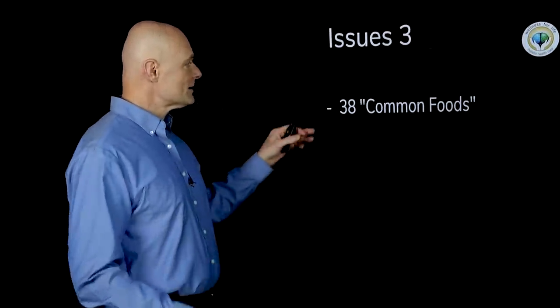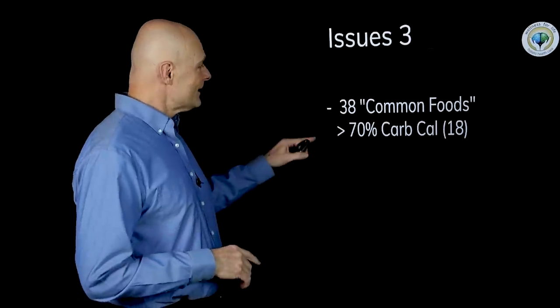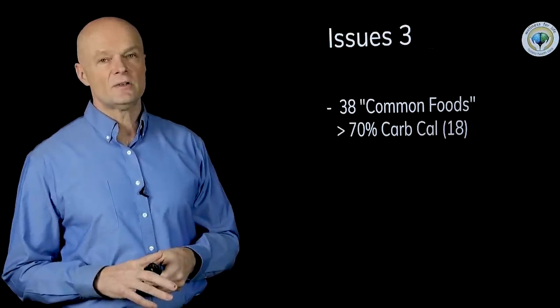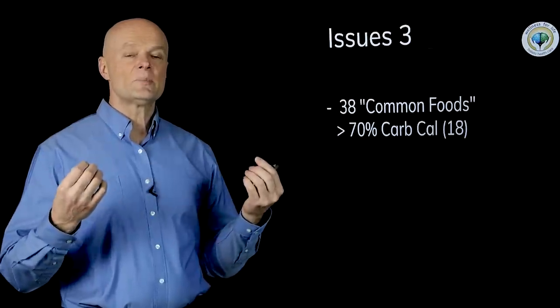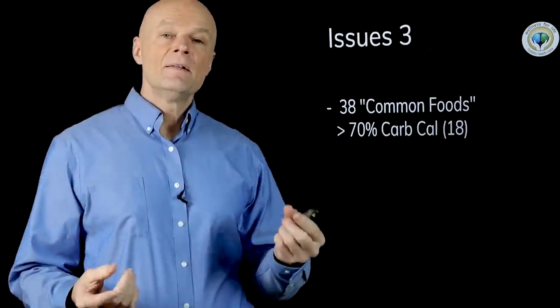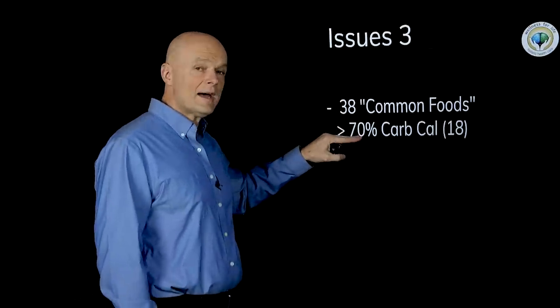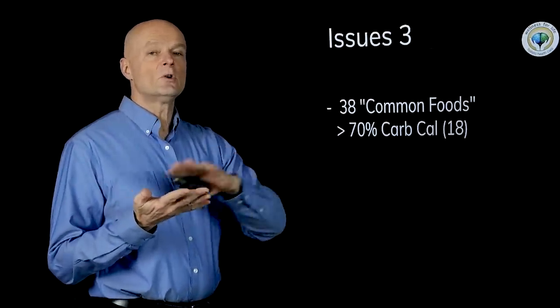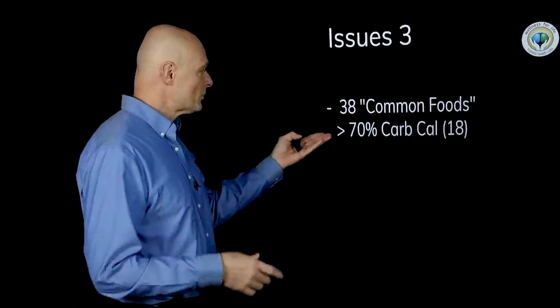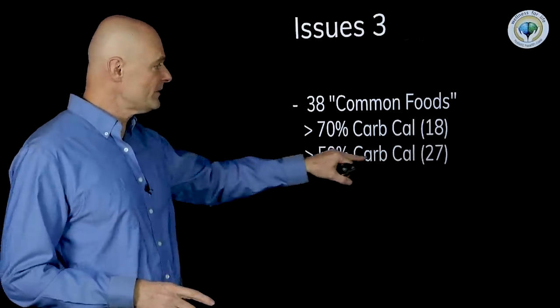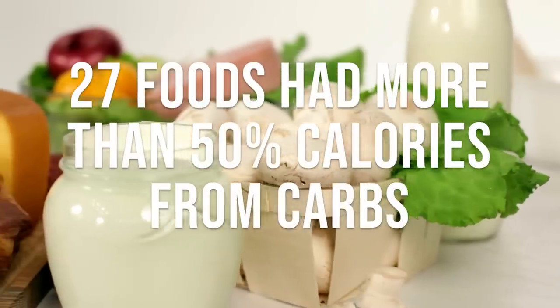The third issue has to do with their choices of food. They had 38 common foods as they called it. But 18 of these foods had more than 70% of their calories from carbohydrate. This just goes to show how warped our perception is of what food really is. If we look at how our ancestors would eat like a paleo type diet there were basically no foods at all that would have over 70% of their calories from carbohydrate. With our ancestors food you eliminate all sugar all processed foods all grains. A full 27 foods had more than 50% of their calories from carbohydrates.